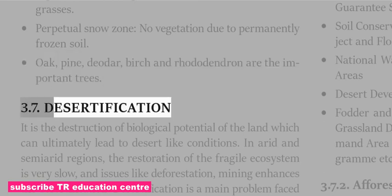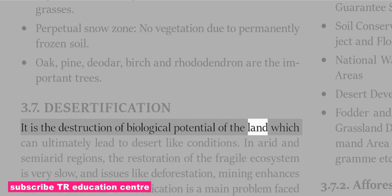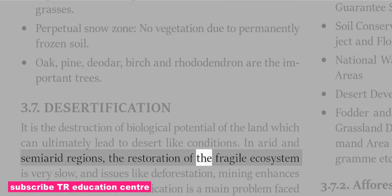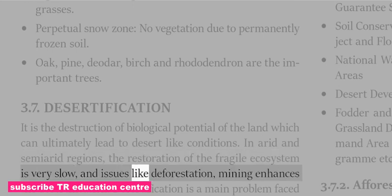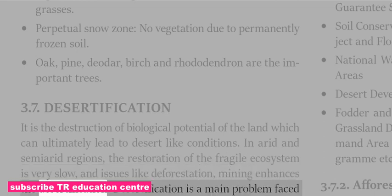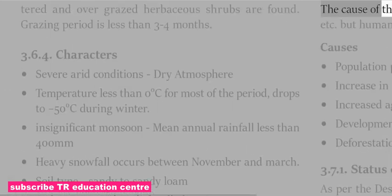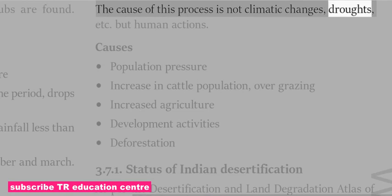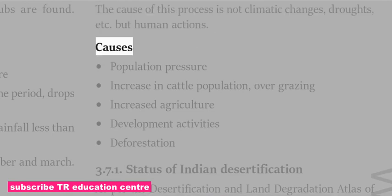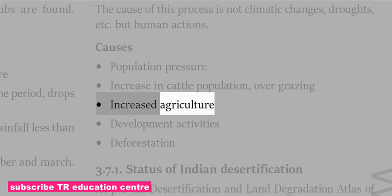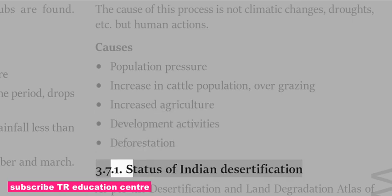Desertification is the destruction of biological potential of the land, which can ultimately lead to desert-like conditions. In arid and semi-arid regions, the restoration of the fragile ecosystem is very slow, and issues like deforestation and mining enhance desertification. Desertification is a main problem faced by desert-adjoining areas stretching across parts of Rajasthan, Gujarat, Punjab and Haryana. The cause is not only climatic changes and droughts but primarily human actions, including population pressure, increase in cattle population, overgrazing, increased agriculture and development activities.